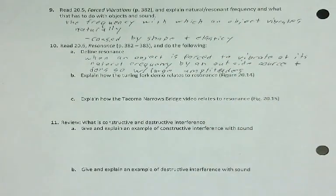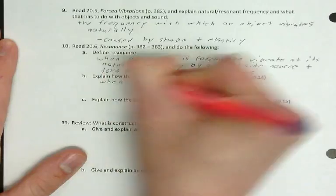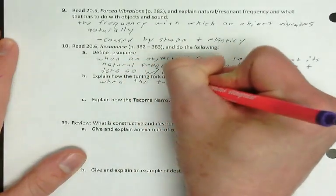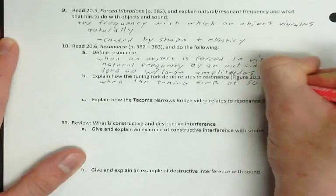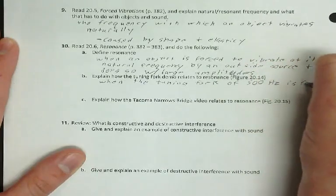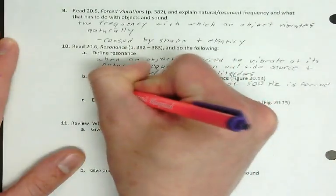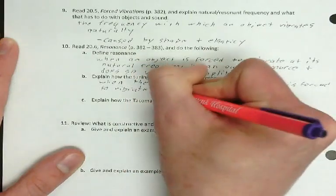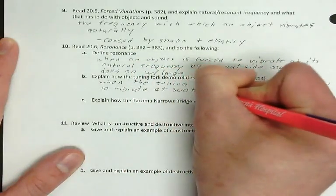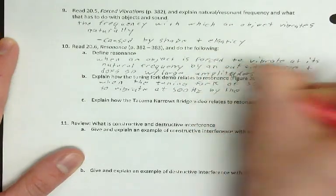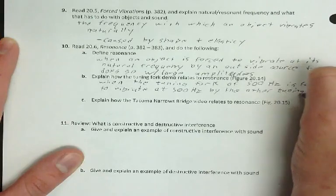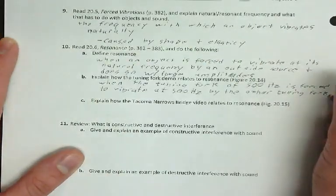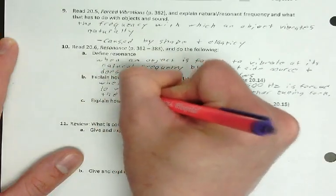Okay. I'm going to show you two demos of this. So when the tuning fork of 500 hertz is forced to vibrate at 500 hertz by the other tuning fork, the first does so with large amplitude.